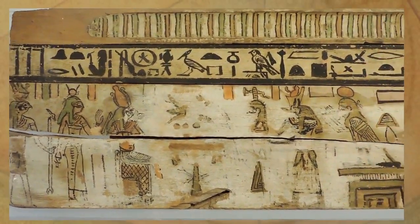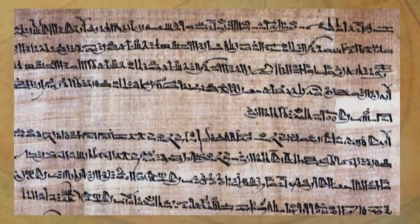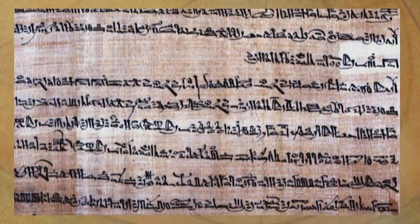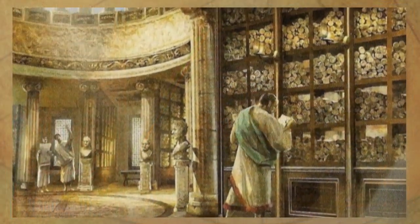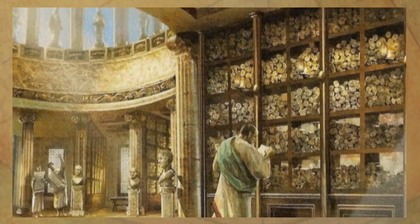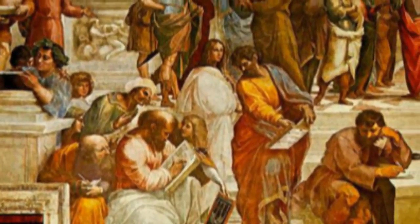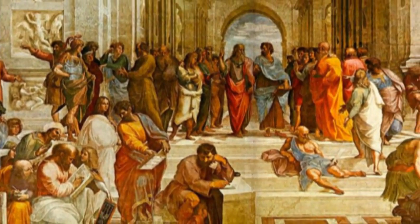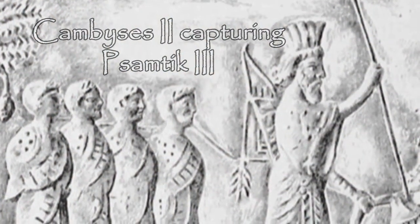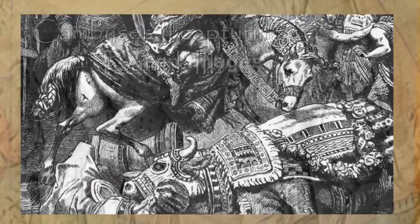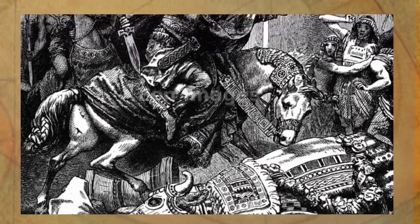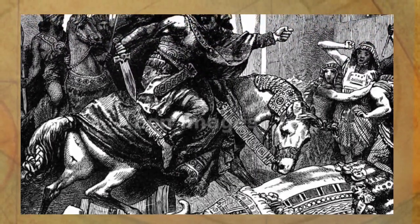Heliopolis is also written about in detail in the Great Harris Papyrus, which lists the immense wealth and prestige connected to this all but forgotten site. The home of the oldest obelisks, Heliopolis was also the center of ancient Egyptian science and records until the great Library of Alexandria surpassed it as the hub of learning in the Ptolemaic period. For at least two and a half thousand years prior to this, it was Heliopolis to which the great minds came to study and be initiated into the ancient Egyptian mysteries — Plato and Pythagoras themselves having been listed as Heliopolitan initiates.